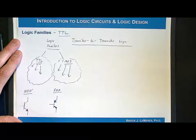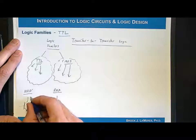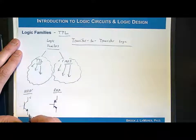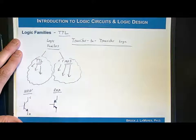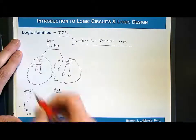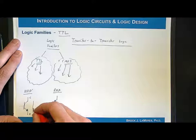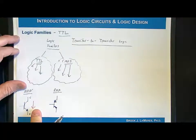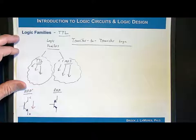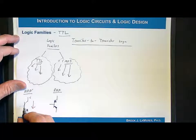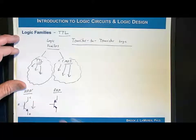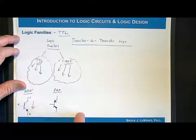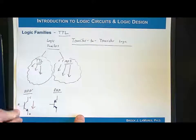The terminals on these: this is called the collector on an NPN, this is the emitter, and it's very similar to how a CMOS transistor works. Current flows from the collector to the emitter, and you control how much current flows by putting a signal on a control terminal. The control terminal in an NPN transistor is called the base terminal.